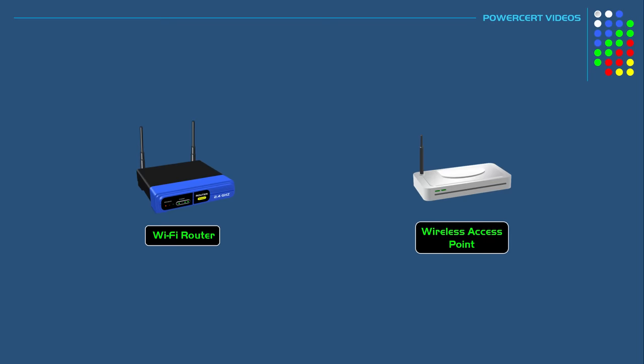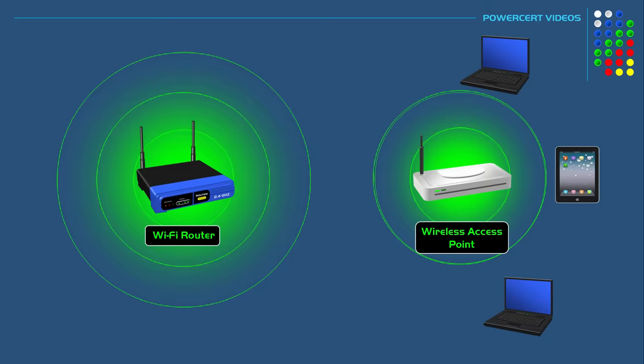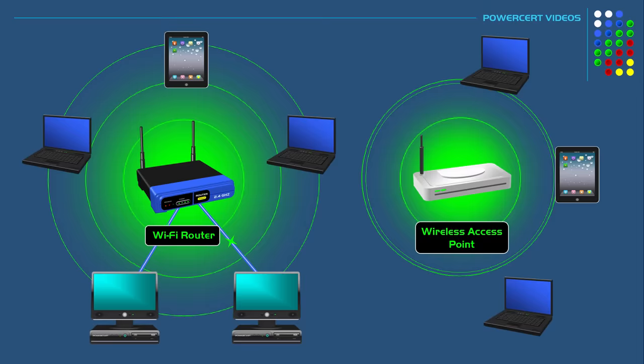Another difference between these is how devices are able to connect to them. Wireless access points are strictly for wireless devices to connect to, whereas wi-fi routers are able to accept connections from both wireless devices and wired devices, because in addition to having a wi-fi antenna, wi-fi routers will also have a built-in switch to accept ethernet cable connections.